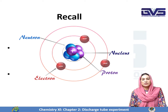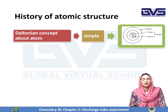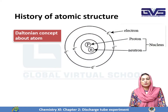Electrons surround the nucleus, and the nucleus consists of Protons and Neutrons. What is the history of Atomic Structure? First of all, Dalton gave the concept about Atomic Structure — that Atoms consist of very simple parts of the elements that are called Electrons, Protons and Neutrons.